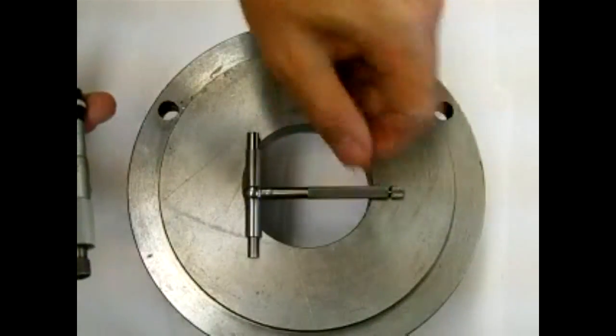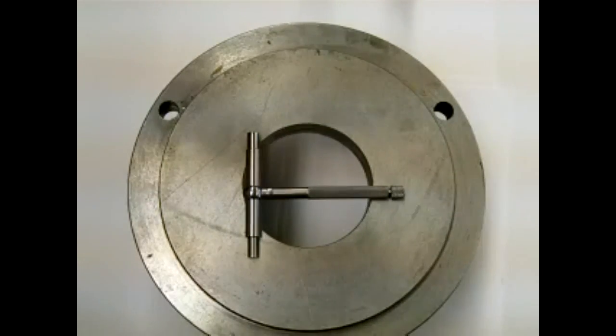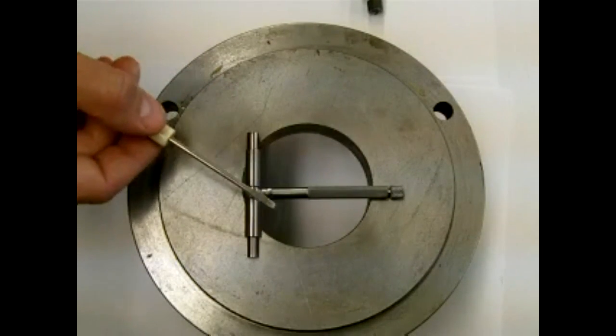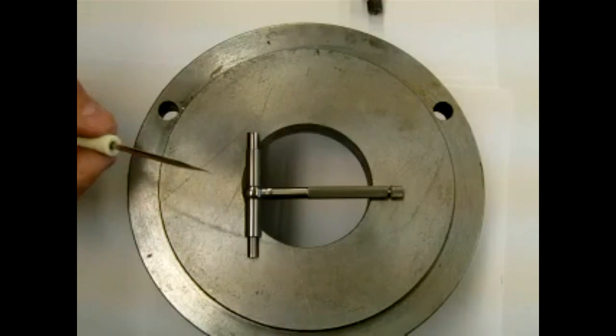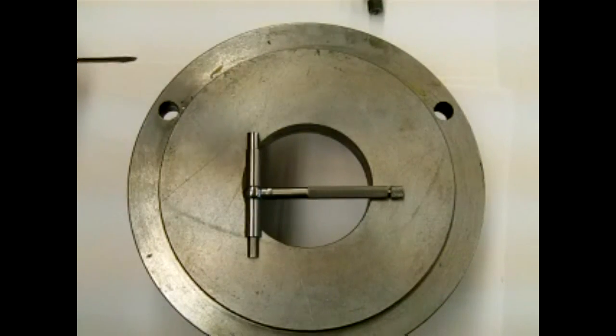These telescoping gauges are a transfer type measuring tool. In other words there is no scale on this tool. So I have to transfer whatever measurement I get across these measuring faces to another measuring device such as a micrometer caliper.